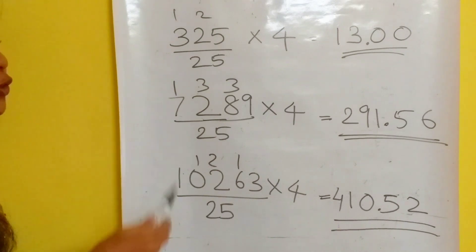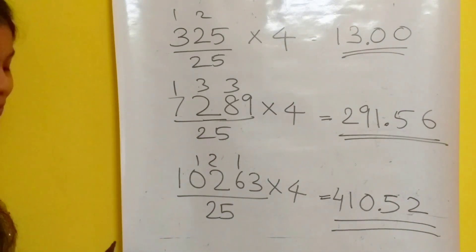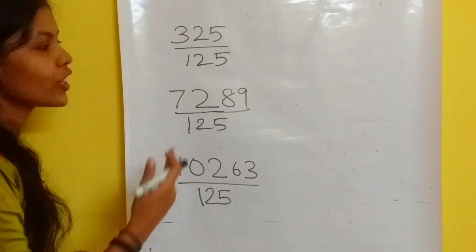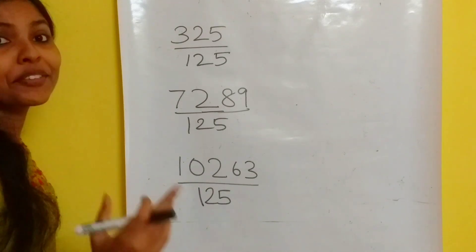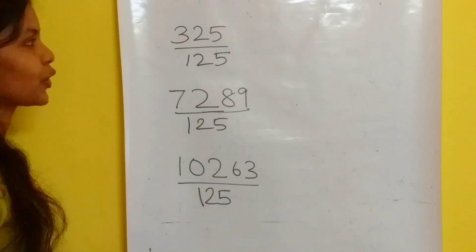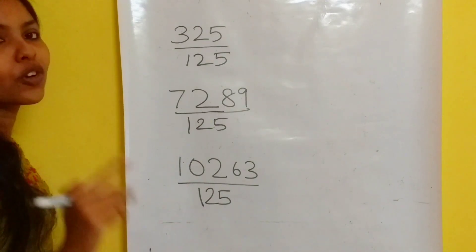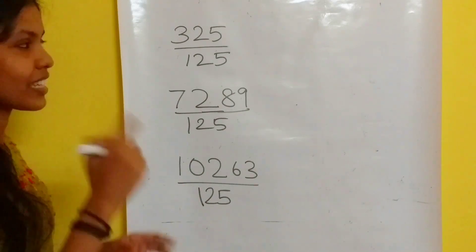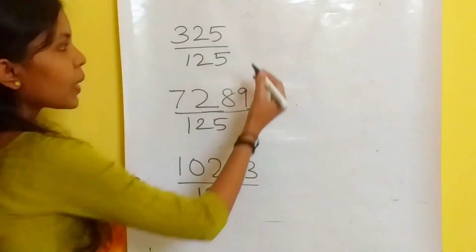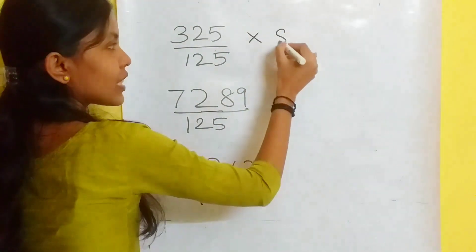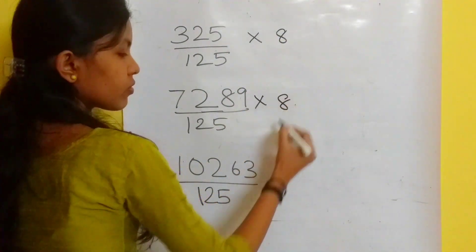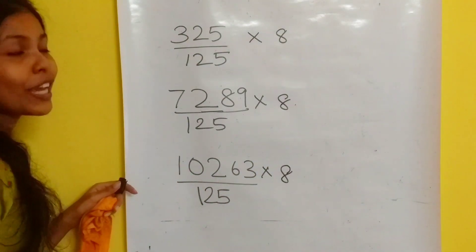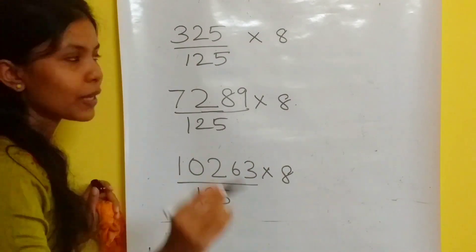It's very simple to do calculations in this manner. Finally, we are going to divide all these numbers by 125. Here also, you just have to follow two steps. First step is to multiply the numerator by 8. Second step: there should be three digits after the decimal point.